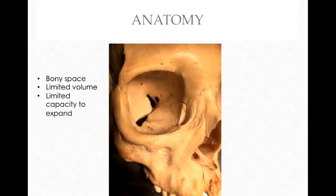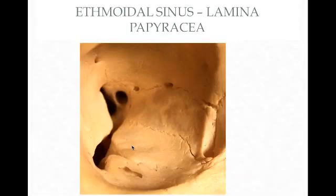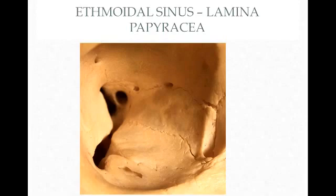So what causes orbital cellulitis? The majority of the time it's an extension from the sinuses. The orbit is surrounded by three of them: the frontal sinus, the ethmoidal sinus, and the maxillary sinus. In the ethmoidal sinuses there's something called the lamina papyracea, which composes the medial wall of the orbit. There are perforations within these walls, and they are the most common route of infection to the orbit — extension from the ethmoidal sinus.